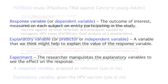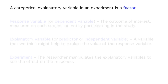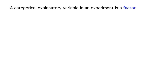In an experiment, the investigator observes how a response variable behaves when he or she manipulates one or more explanatory variables. Since there are only a finite number of values of the explanatory variable that the researcher can possibly study, explanatory variables in experiments are typically categorical and are called factors in this setting.